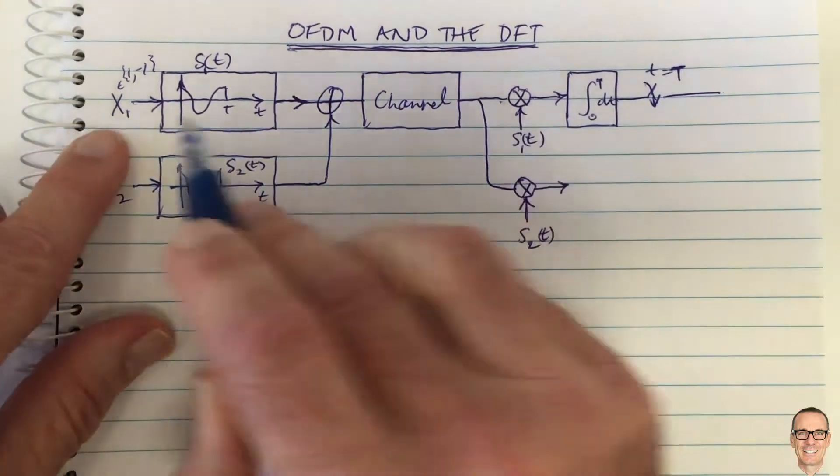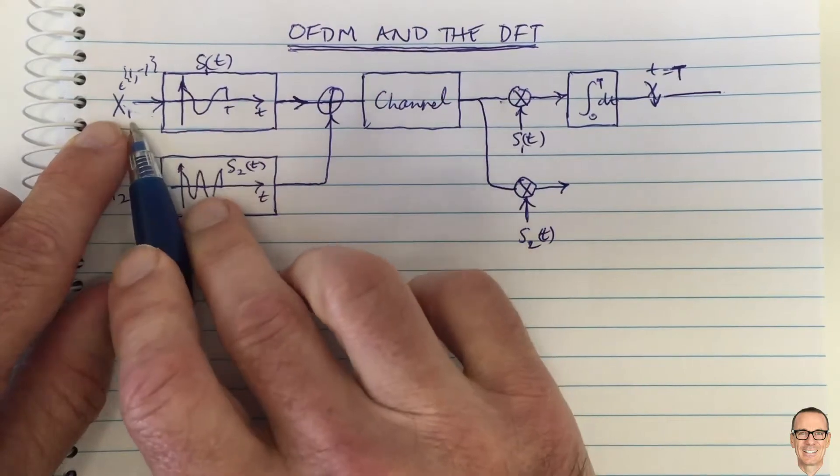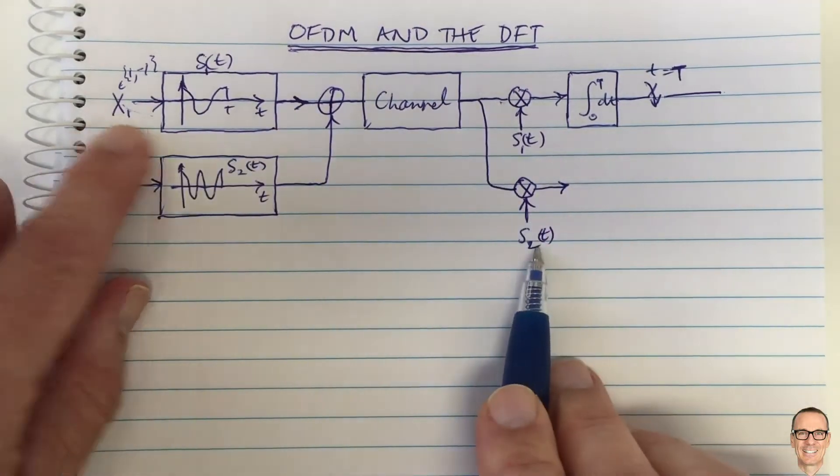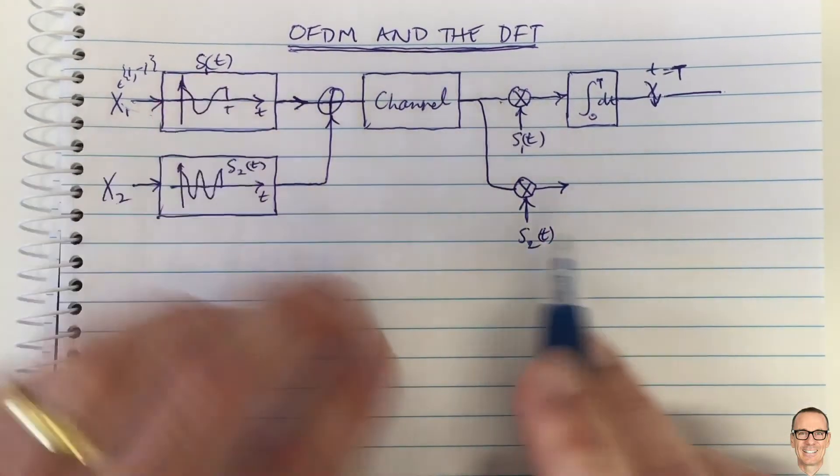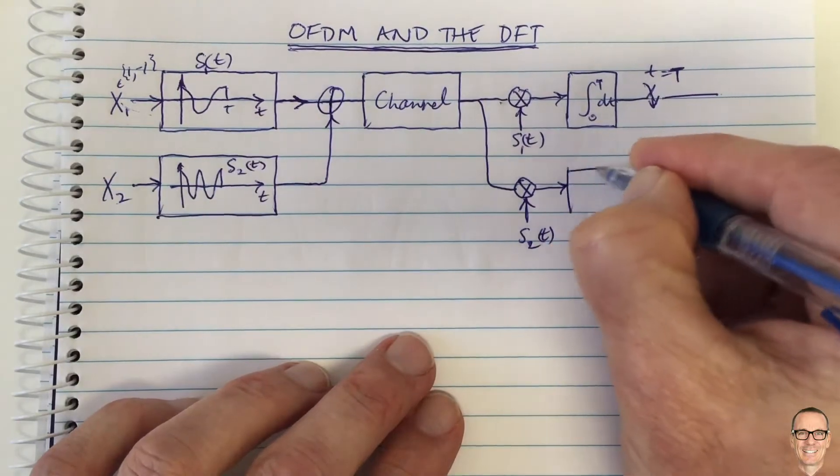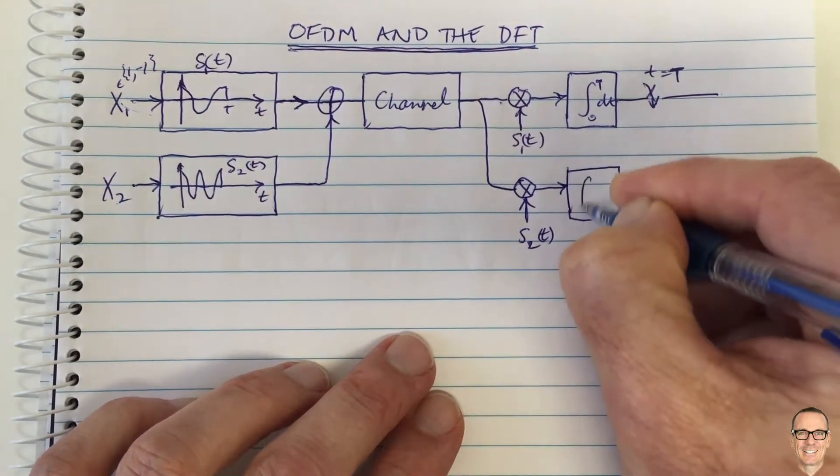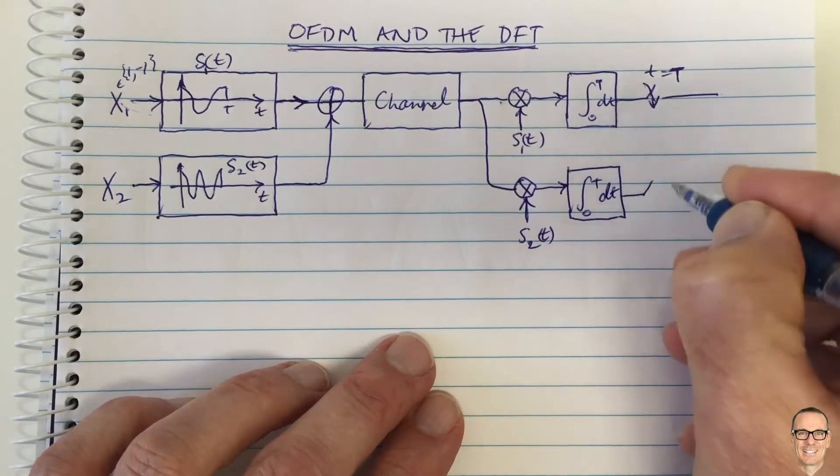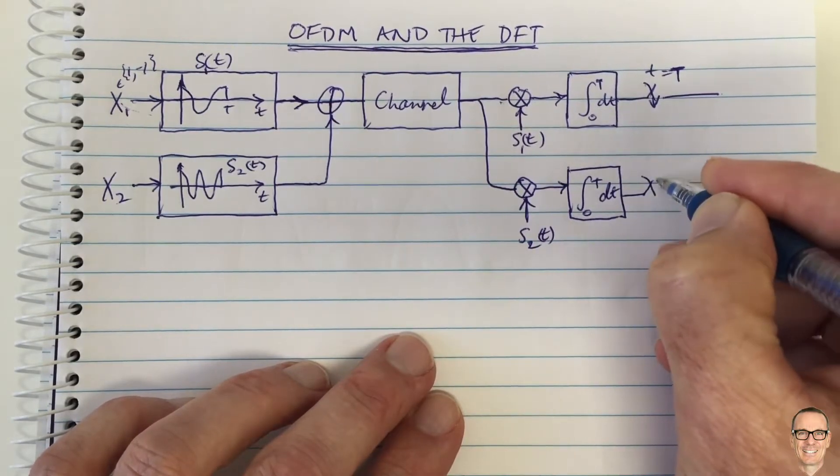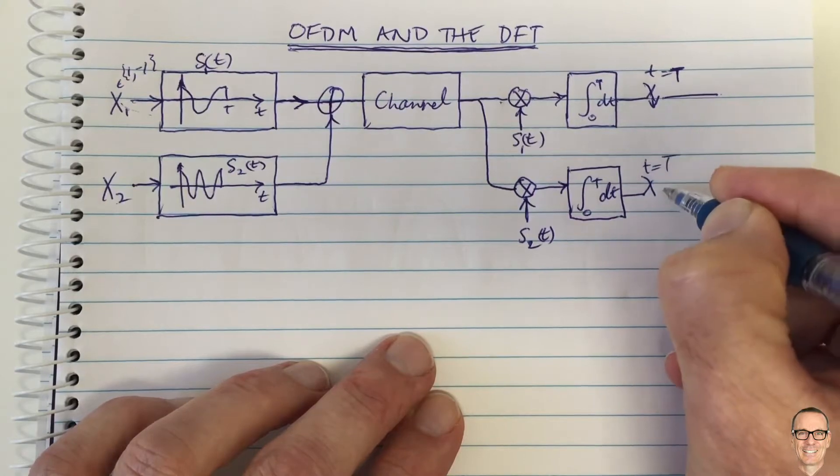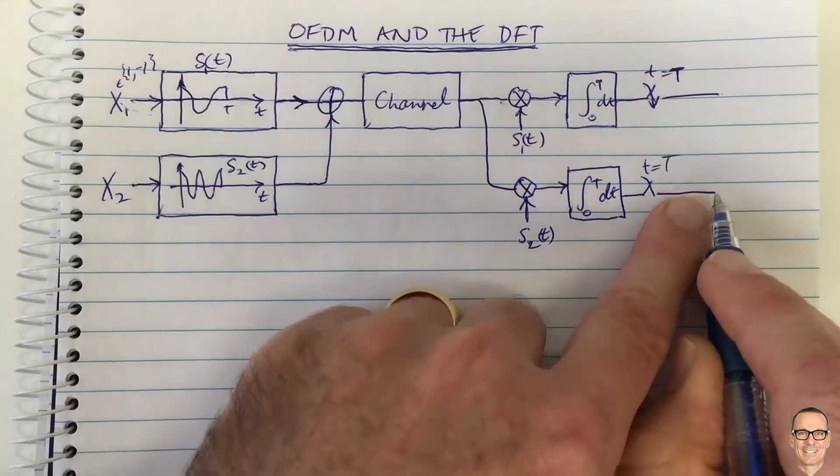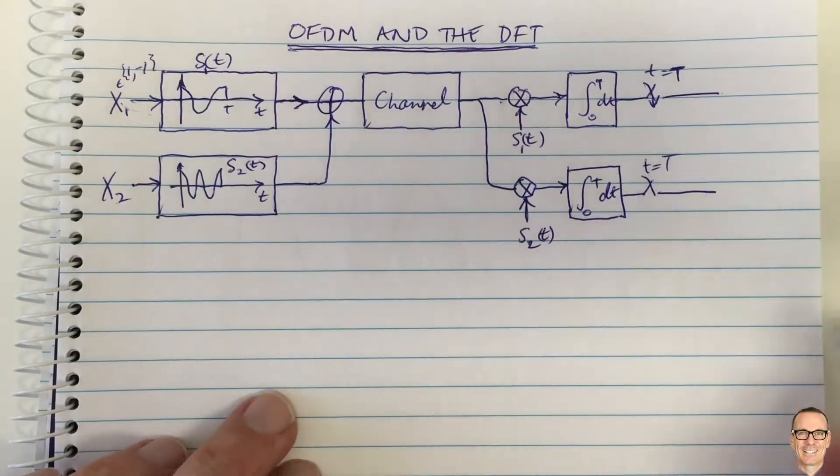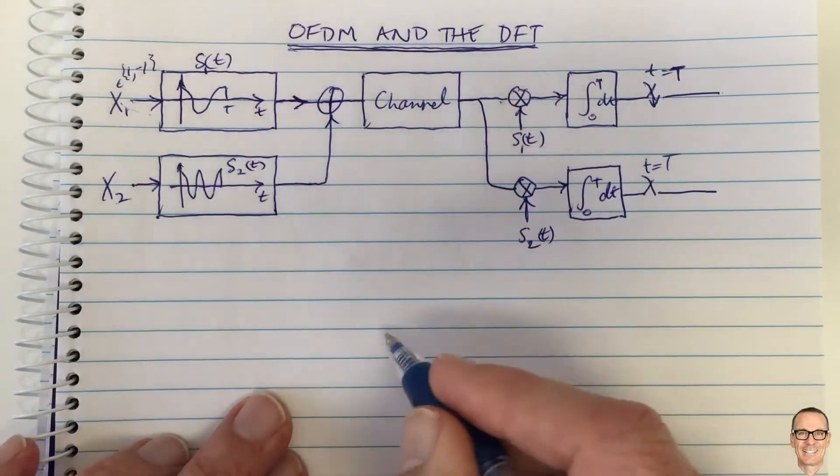The effect of s1, of x1, the digital data from x1 coming through, multiplying s1 times s2—because they're orthogonal, when they get multiplied and integrated, the effect from x1 will be invisible at this output here. What do we mean by that? I'll just write down a little bit of mathematics to show you what's going on.